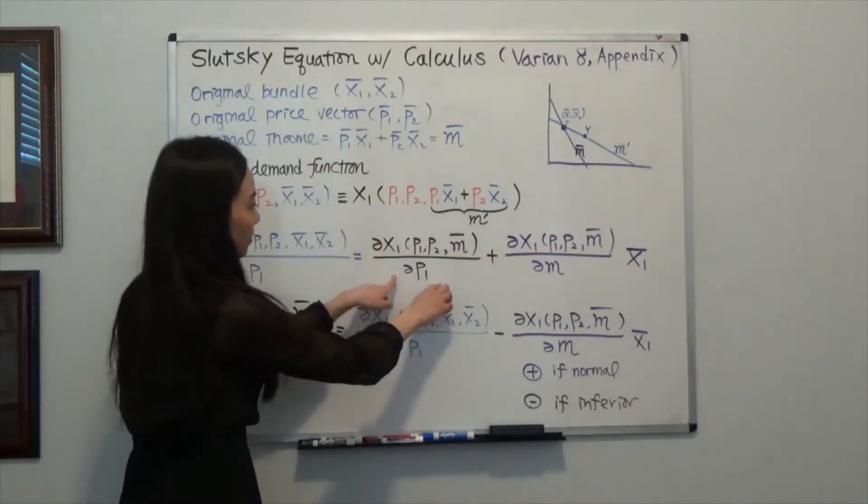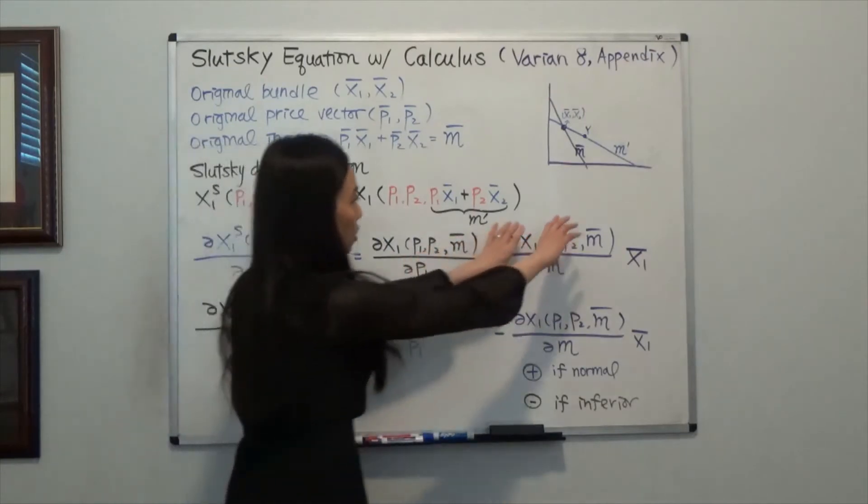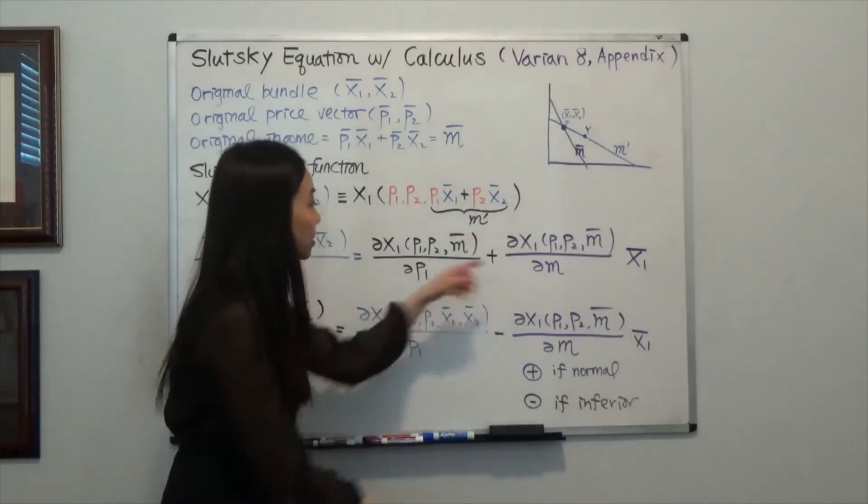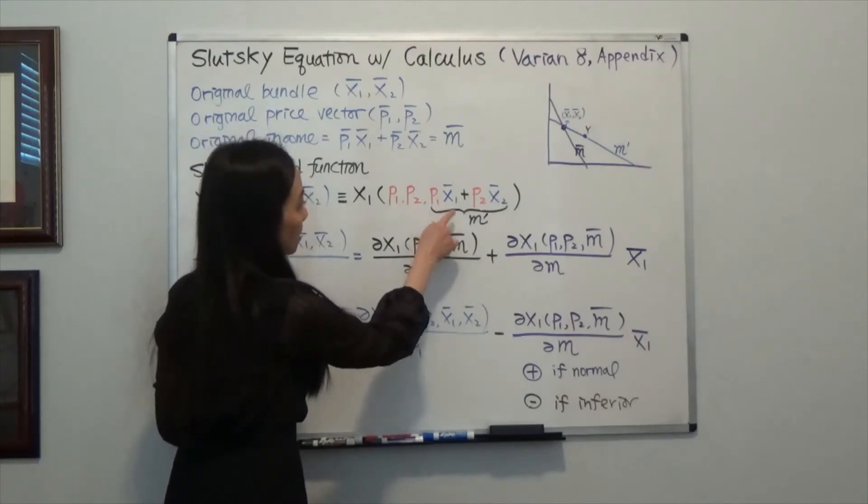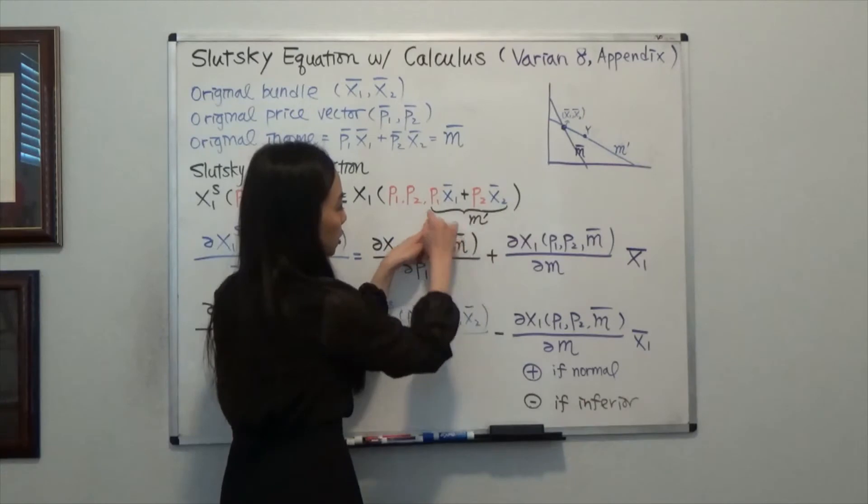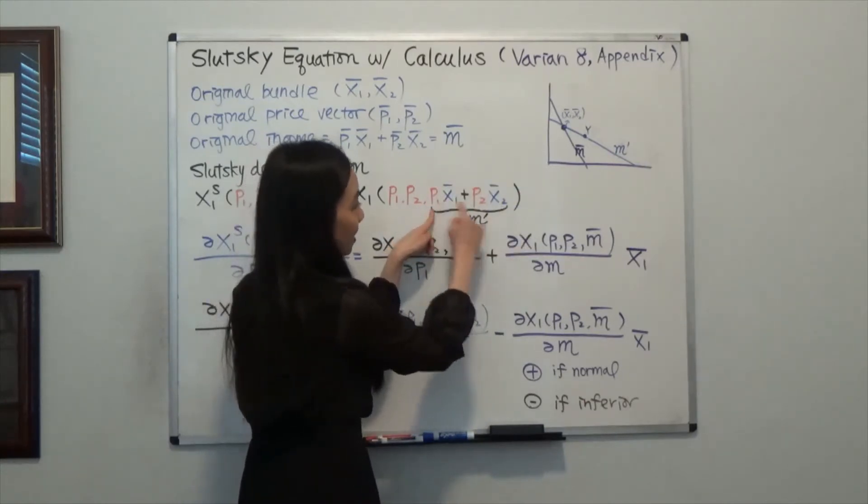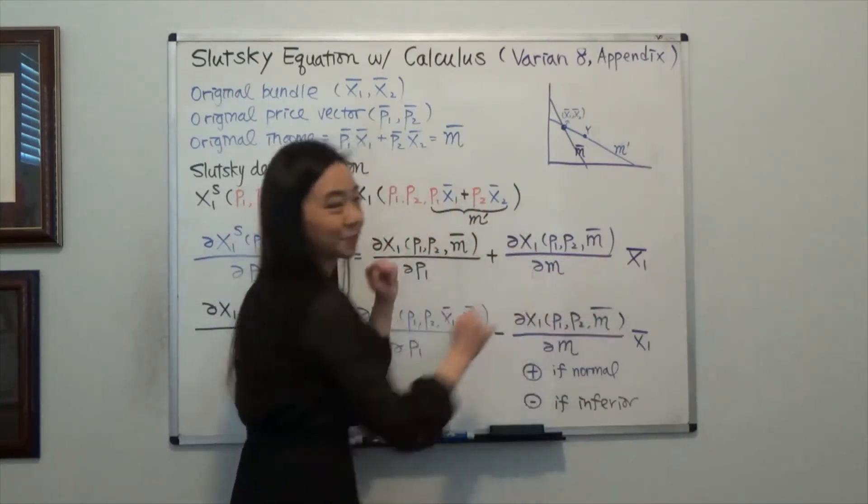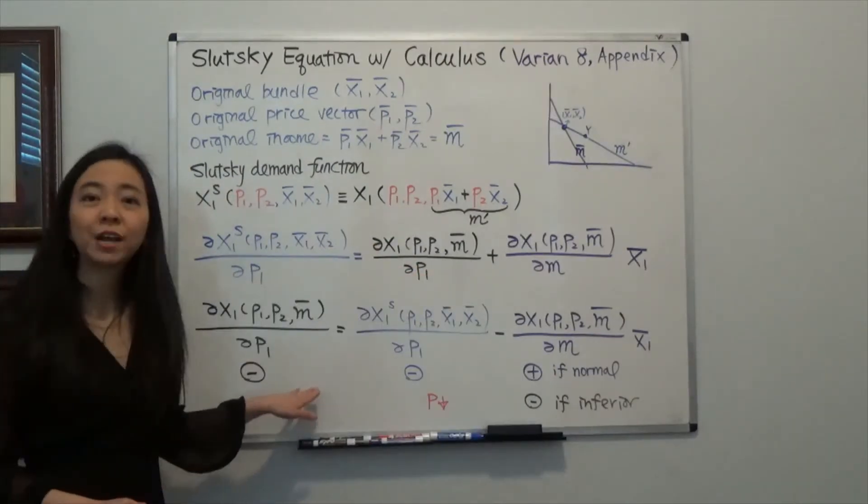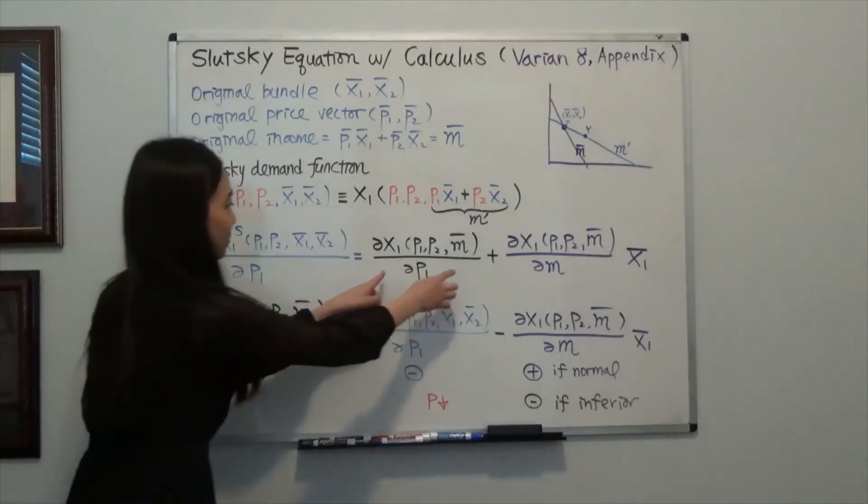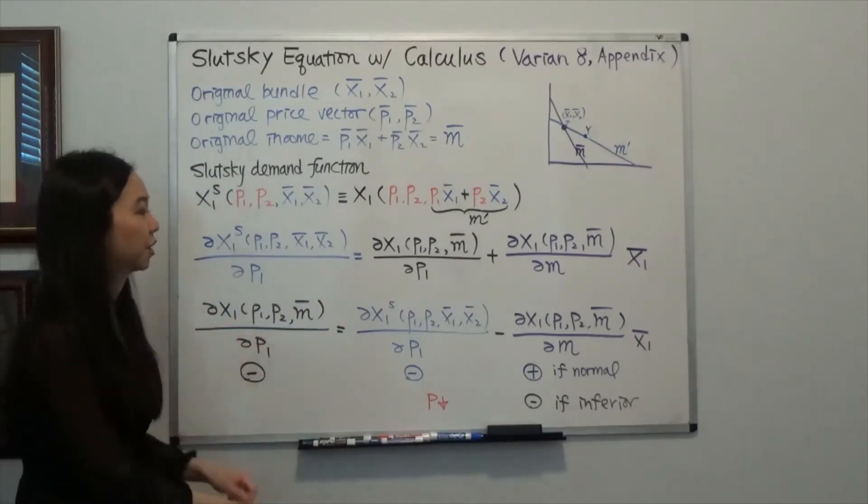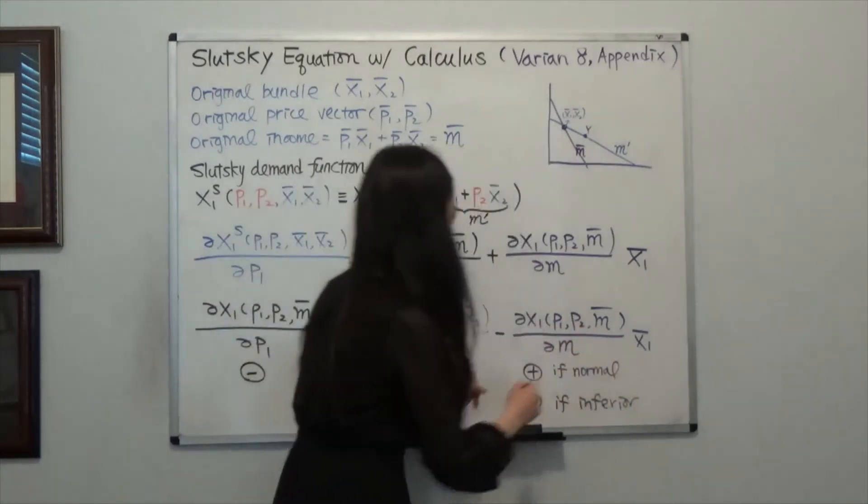After you take the derivative with respect to p1, you also need to do that with respect to m. And you can see that m is a function of p1. So you also take the derivative with respect to this term and then you get x1 bar here. That's the reason why I have two terms. And then you can rearrange the term. So you can see I have a color code here. Here is the total effect. It's the sum of substitution effect and income effect.